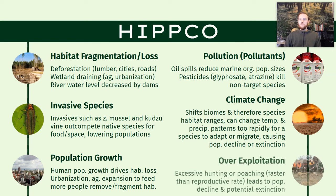Finally, we have the O for overexploitation. This could be overhunting or overharvesting. Basically, humans overuse species — what we specifically mean is harvesting them at a rate that's faster than they can repopulate.